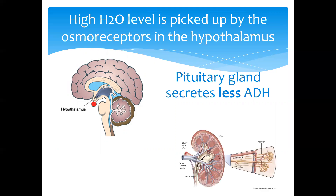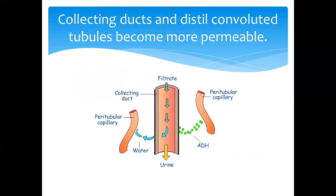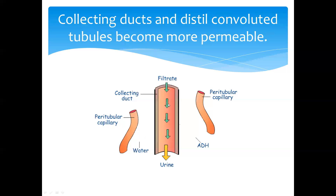Less ADH is therefore sent to the target organ, which is the kidney. At the renal tubules — the collecting ducts and the distal convoluted tubules — ADH was causing a lot of water reabsorption. But the lack of ADH now will result in the permeability of these tubules being decreased. Less water is reabsorbed, and more water goes out into the urine. As a result, a large volume of dilute urine is produced and excreted.